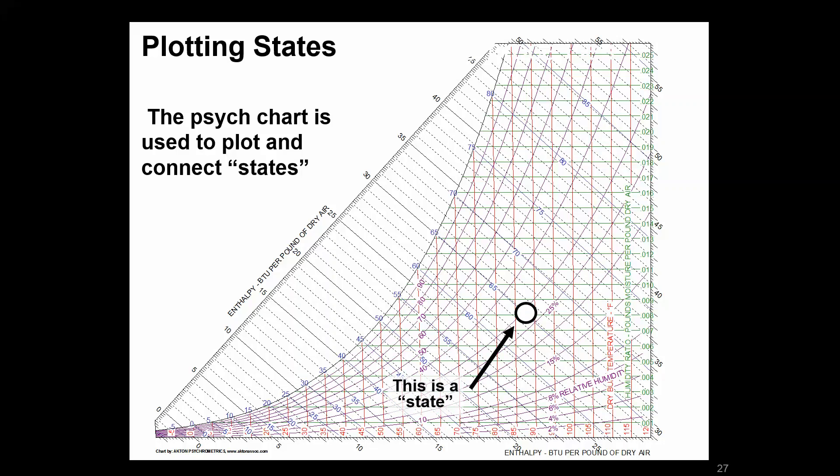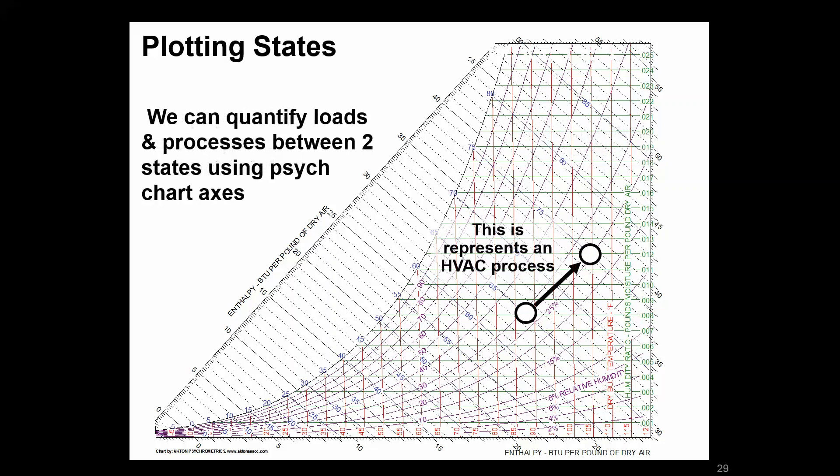As an example, this is a state and this is another state. When we connect them through some process, that's something we can either talk about qualitatively, to say this is a humidification and sensible heating process, or quantitatively once we understand what the labels and axes represent.